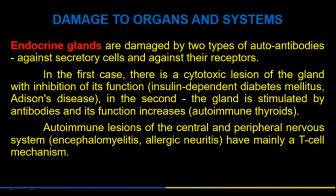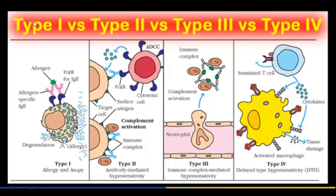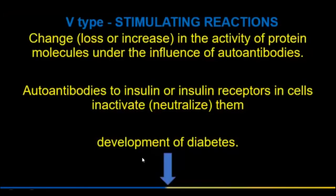Autoimmune lesions of the central and peripheral nervous system mainly have a T-cell mechanism. Type V (stimulating reactions): loss or increase in the activity of protein molecules under the influence of autoantibodies. For example, autoantibodies to insulin or insulin receptors inactivate or neutralize them, contributing to the development of diabetes.